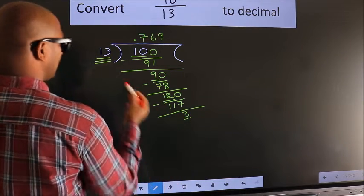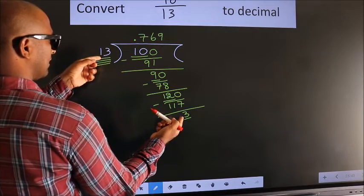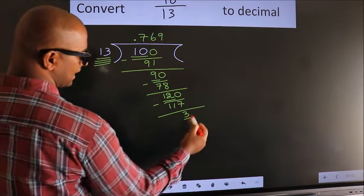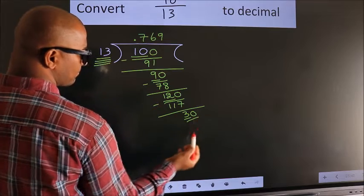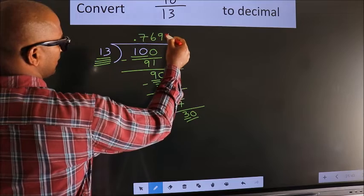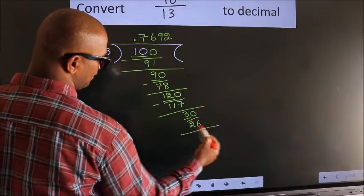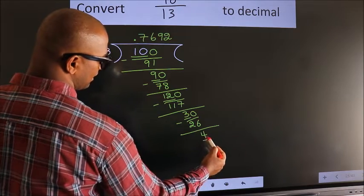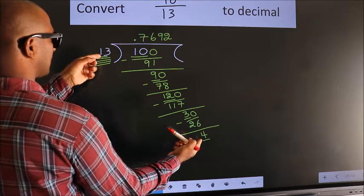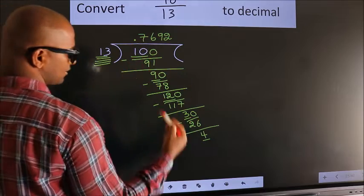Here we have 3, and 3 is smaller than 13. We already have the decimal so we can directly take a 0, giving us 30. A number close to 30 in the 13 times table is 13×2=26. Now we subtract and we get 4. Here we have 4, and 4 is smaller than 13, so we can directly take a 0, giving us 40.